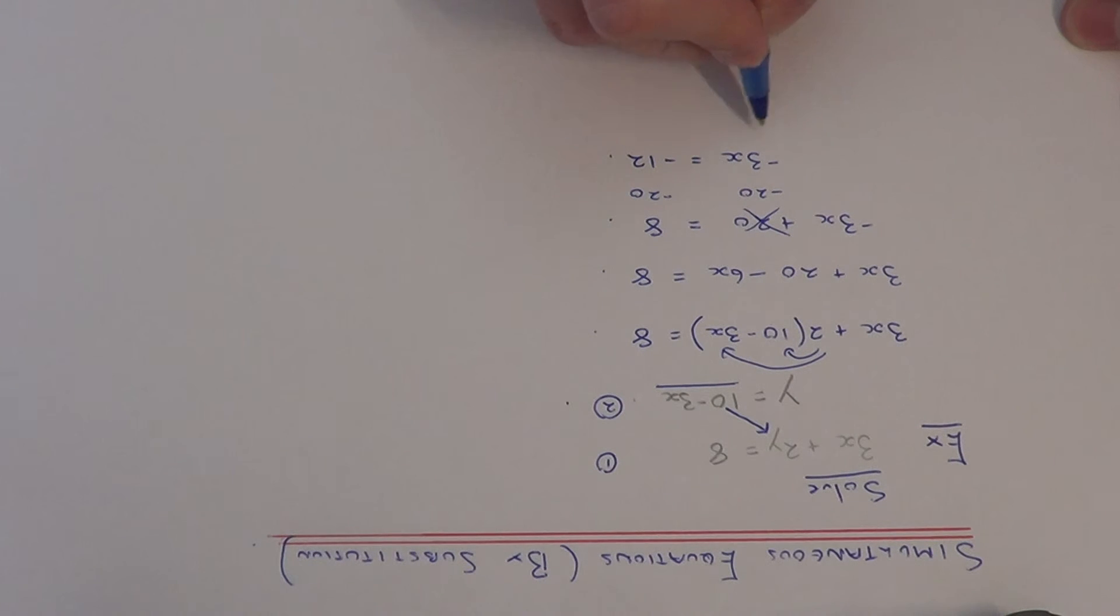So we've now just got to divide both sides by minus 3, because x has been times by minus 3. So minus 12 divided by minus 3 is 4. So we've worked out the x value here.